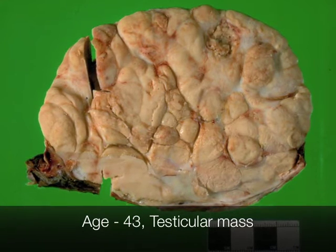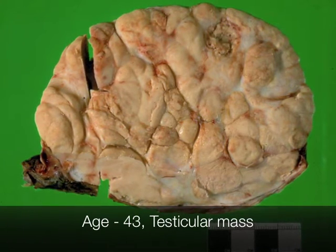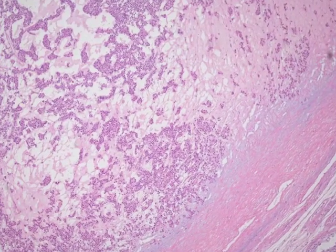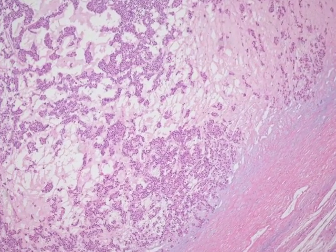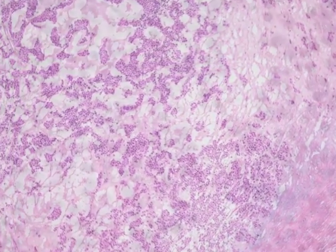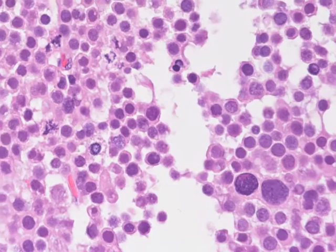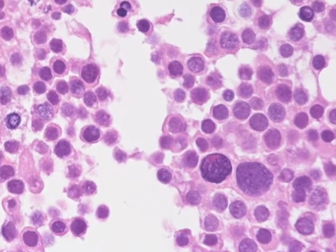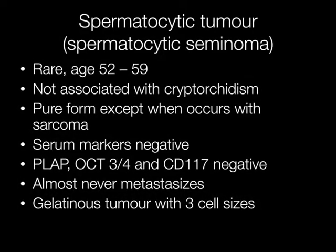Case number 2 is a spermatocytic seminoma, although the WHO is changing the name to spermatocytic tumour to completely differentiate it from the malignant classical seminoma. Spermatocytic tumours occur in an age range usually between about 52 and 59, which is slightly older than the age range at which classical seminomas occur.